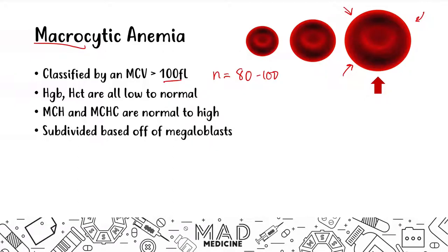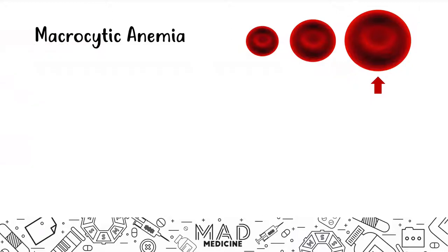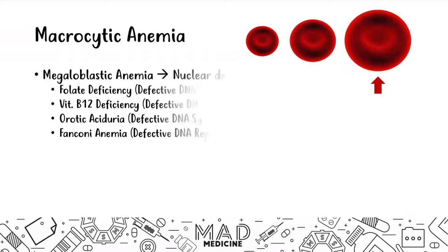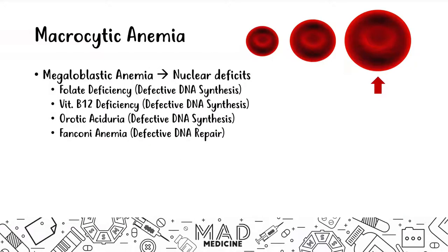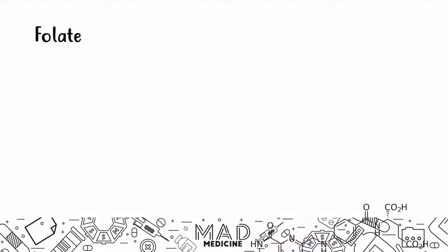Macrocytic anemia is subdivided based on megaloblasts. Megaloblastic anemia occurs due to nuclear defects, and you can also have non-megaloblastic anemias that occur because of non-nuclear deficits. We're going to talk about all of these causes, but today we're focusing on folate deficiency.